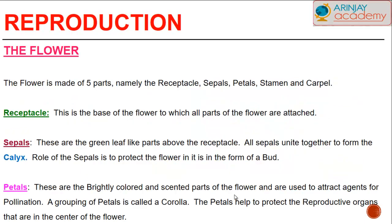Have a look at the function of the different parts. The receptacle is the base of the flower to which all the parts of the flower are attached. The sepals are green leaf-like parts above the receptacle; these unite together to form the calyx and their role is to protect the flower when it is in bud form. The petals are brightly colored to attract agents for pollination, and a grouping of petals is called a corolla. The petals also help to protect the reproductive organs in the center of the flower.